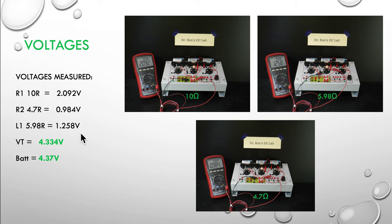Next we're going to look at the three voltages around the circuit. First across the 10R here, across the 10 ohms, we're getting 2.092. The second one, we're across the second resistor here, that's the 4.7, and you can see the display is telling us 0.984. Then finally our lamp, which is 5.98 ohms, and it's reading 1.258 volts.